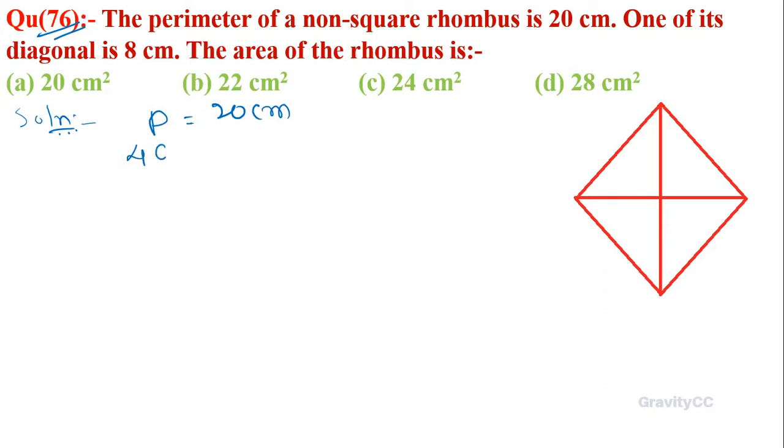The perimeter is 4a equals 20, so a equals 20 divided by 4, which is 5 cm. And here we have sides of 5, 5, and here we have diagonal 2d1.